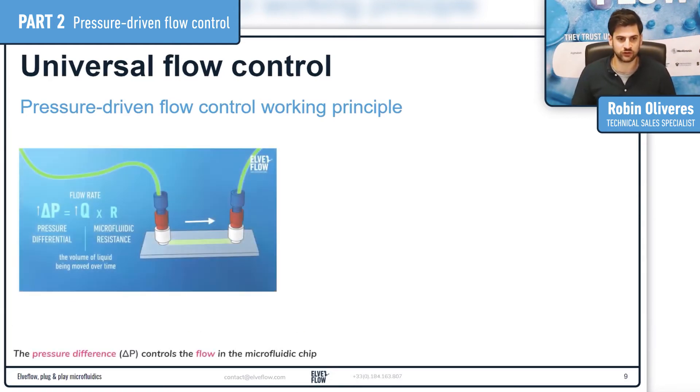To go into more detail: how do you relate pressure to flow rate? The relationship between the two is what we call the microfluidic resistance, and it's dependent on the dimensions of the circuit. To give you a quick image of that - it's easier to push liquid through a large pipe rather than through a very tiny one.